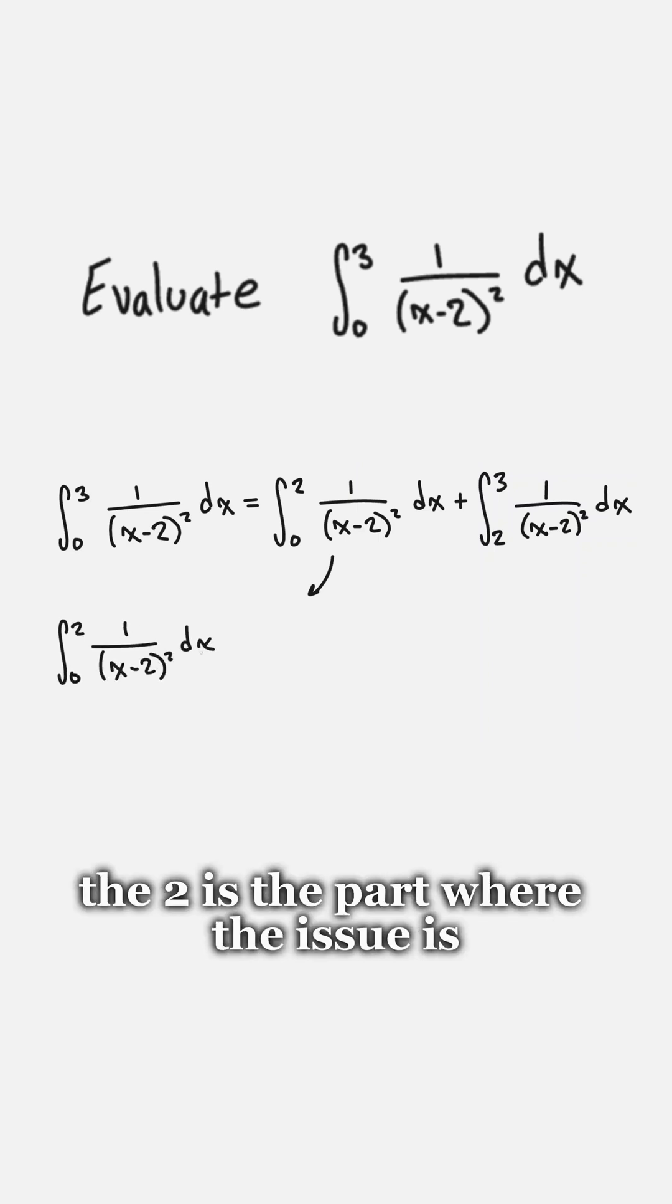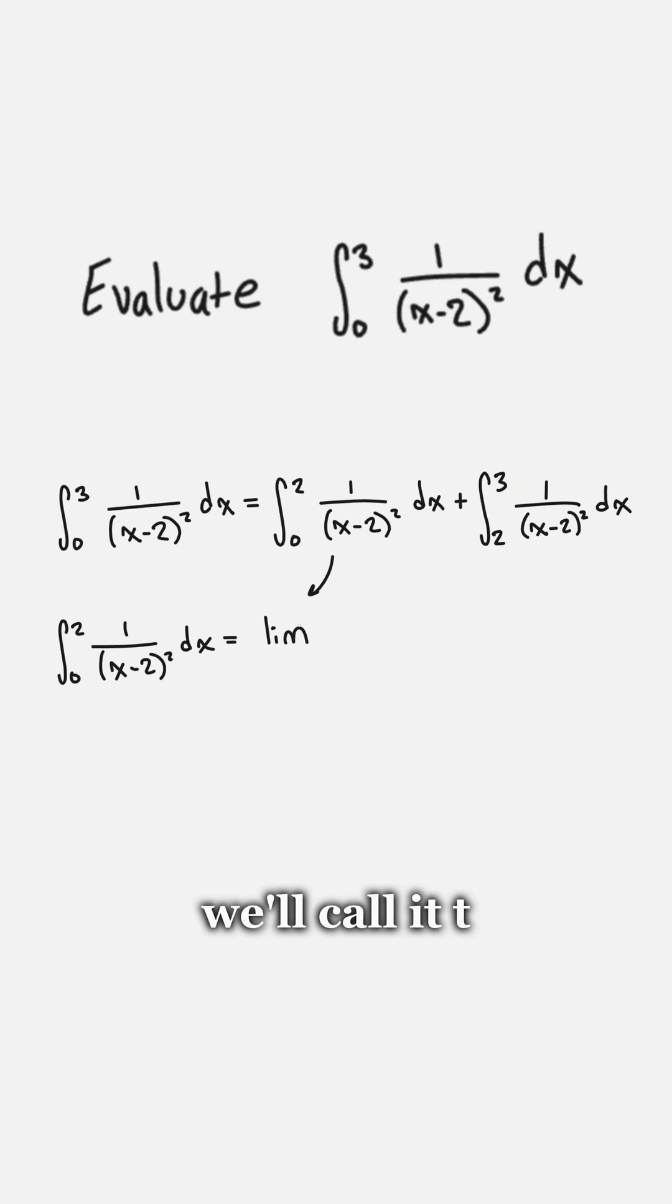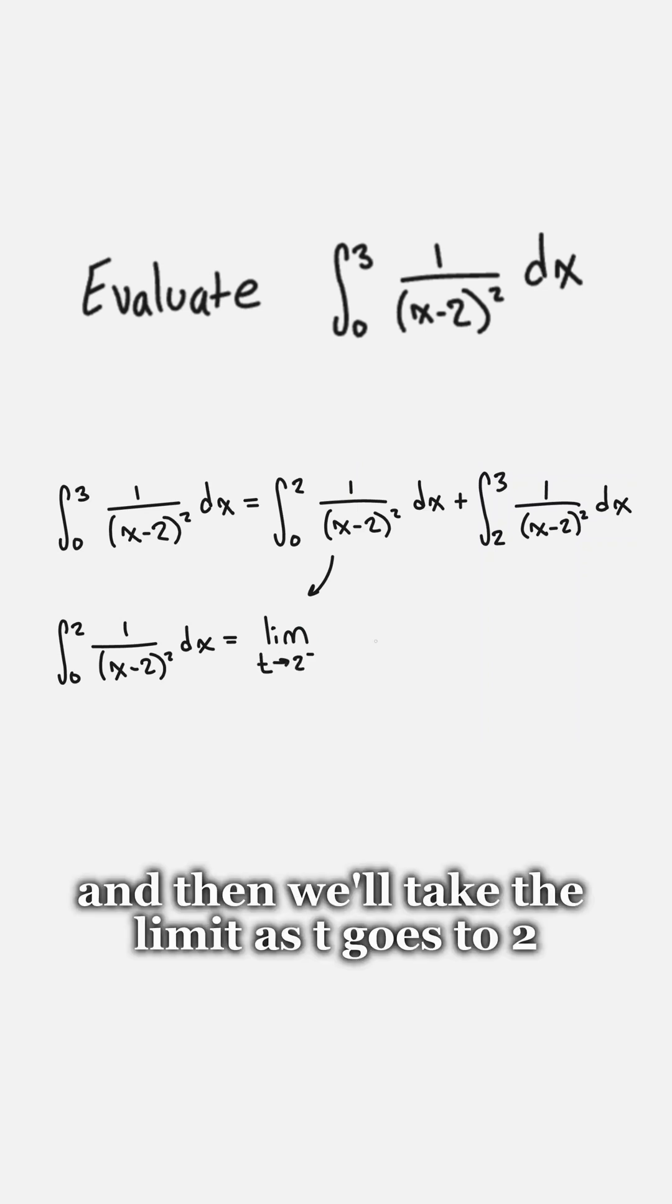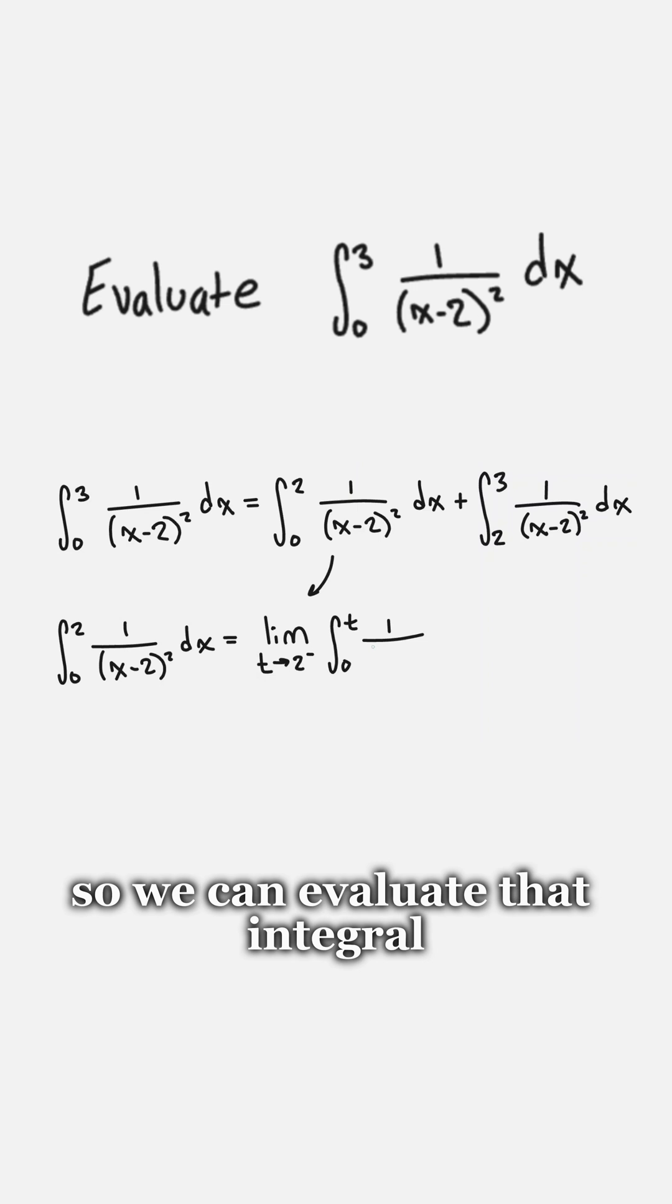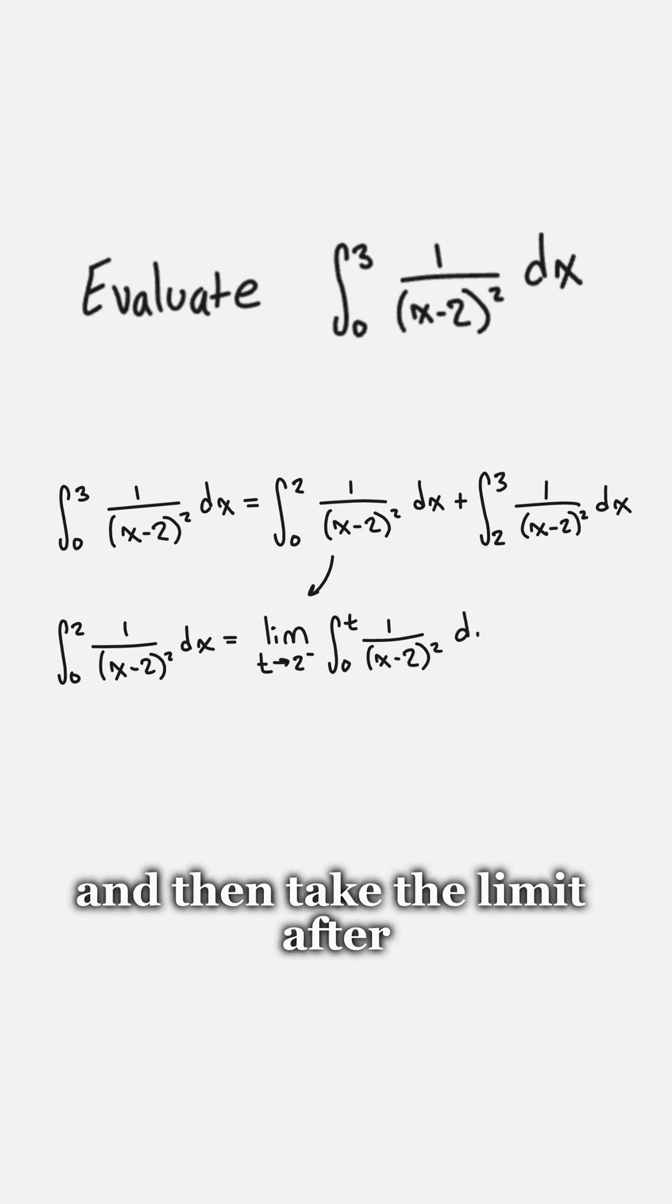The 2 is the part where the issue is, so let's replace that with a variable we'll call it t, and then we'll take the limit as t goes to 2 from the negative side. So we can evaluate that integral and then take the limit after.